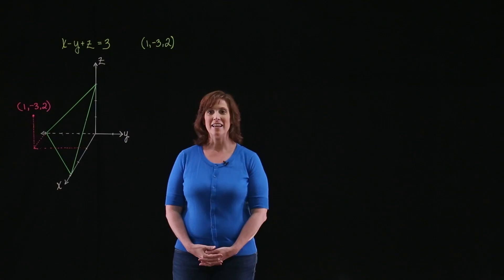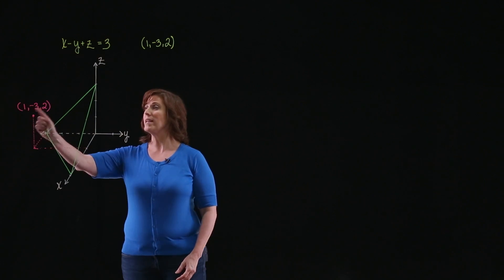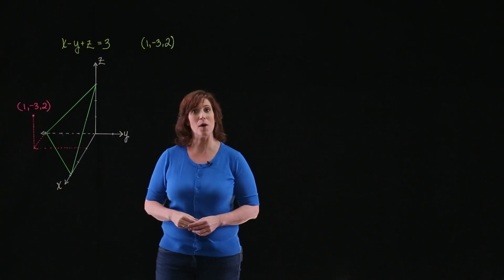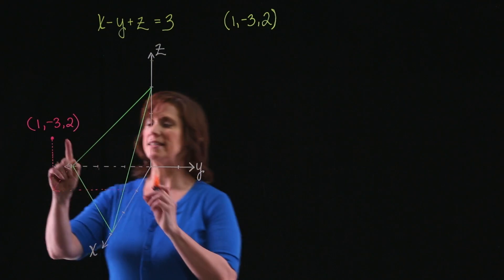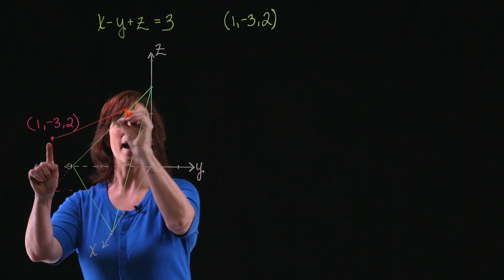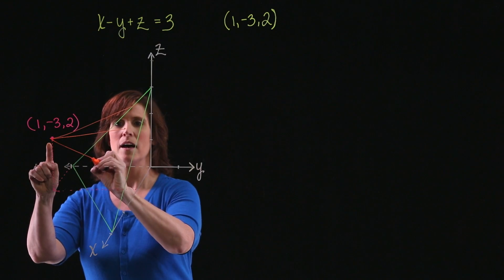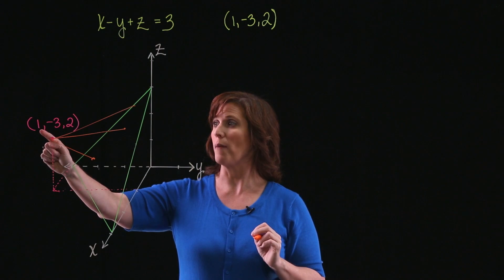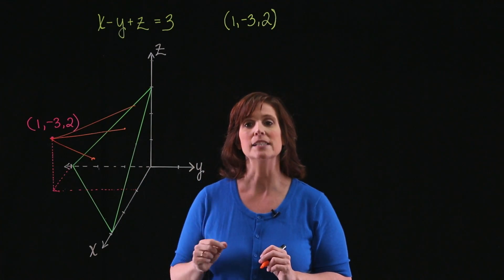Hello, I'm Cheryl. In this problem, we're asked to find the minimum distance between the point and the plane, which is described by x minus y plus z equals 3. As you can see, if I'm looking for the distance between this point and my plane, there are lots of different ways I can do that — coming to various points, all leading from the point 1, negative 3, 2. I want to find which of these distances is the smallest.